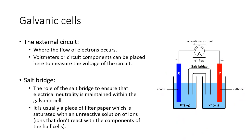Then we have the external circuit. The external circuit is where the electrons flow from one electrode to the other. You can have voltmeters here, you can have light bulbs here — it's effectively what you put there that uses up the energy from this flow of electrons.